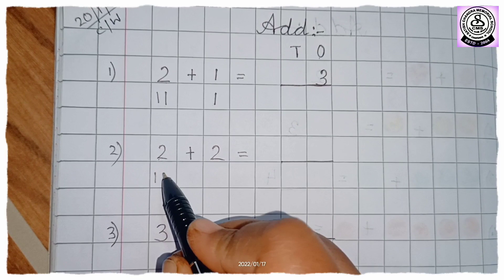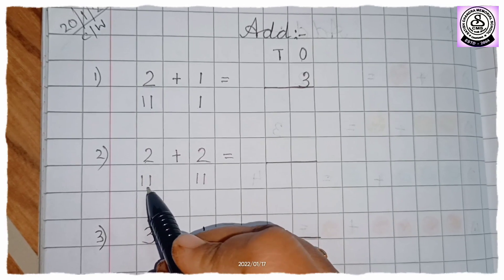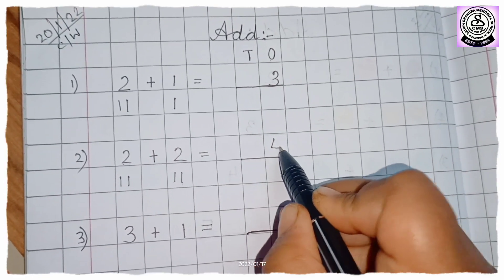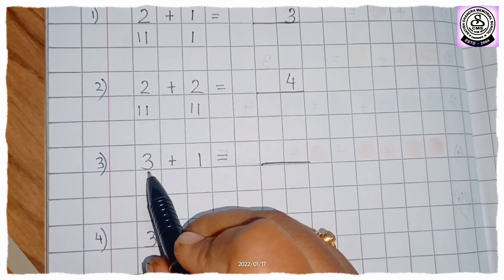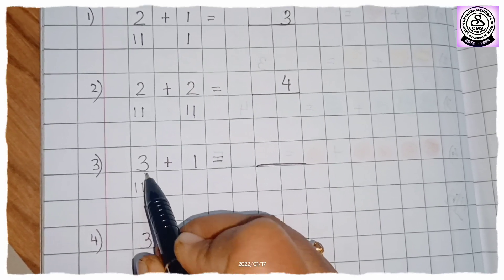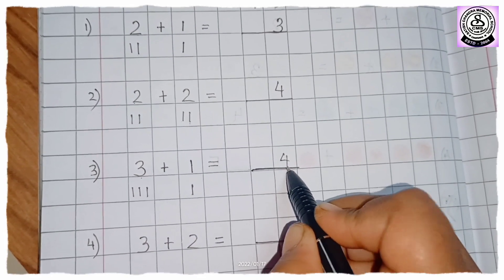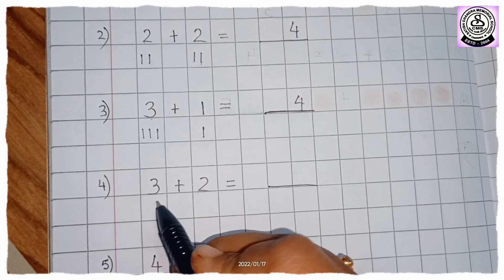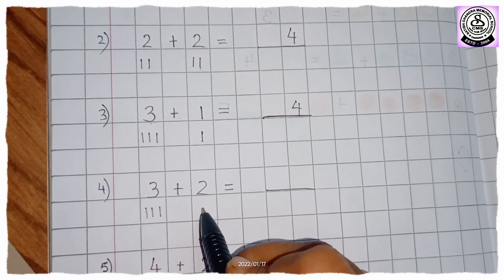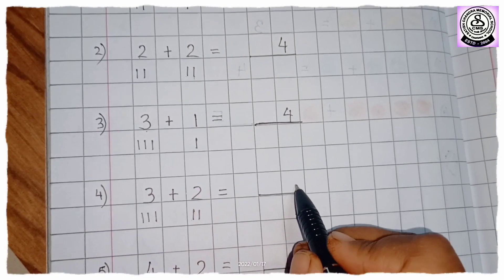So here you could see I have written 2. So 2 means we will draw 2 lines plus. How many lines here? 2. So 2, 3, 4. So the answer is 4. Next question. I have written 3 plus 1. 3. I have to draw 3 lines. 3 plus 1. So 1 line. So 3, 4. So write here 4. Now 3 plus 2. So we will draw here 3 lines plus 2. So we will draw here 2 lines. So 3, 4, 5. So the answer is 5.